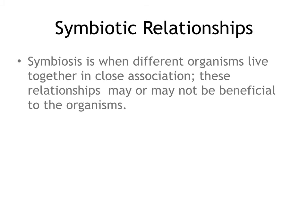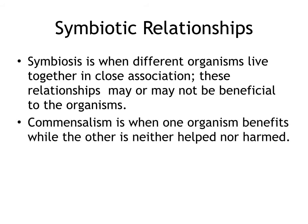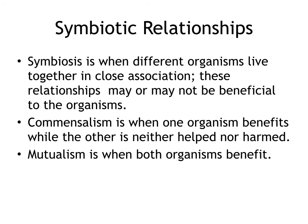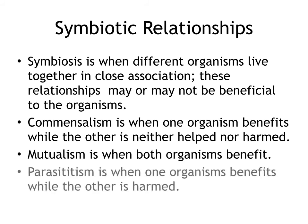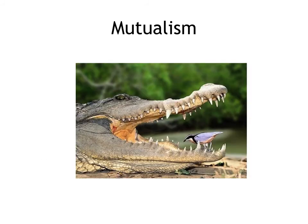Symbiosis is when different organisms live together in close association. These relationships may or may not be beneficial. Commensalism is when one organism benefits while the other is neither helped nor harmed. Mutualism is when both organisms benefit. Parasitism is when one organism benefits while the other is harmed. For example, mutualism: a crocodile and a plover — the plover cleans the crocodile's teeth, getting a food source, while the crocodile gets clean teeth. Both benefit.